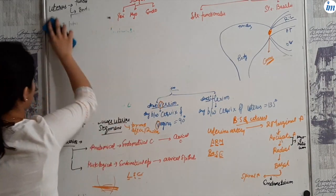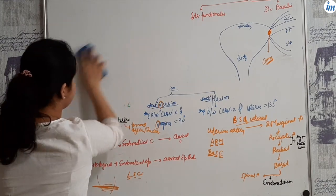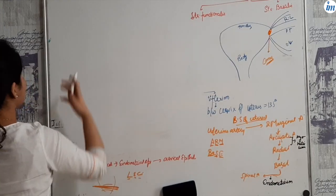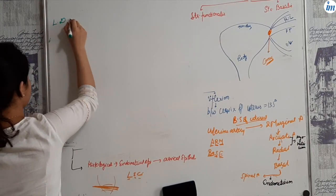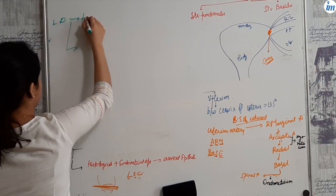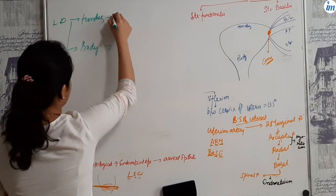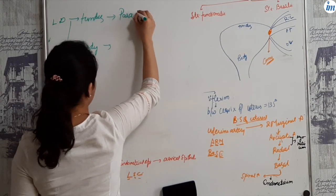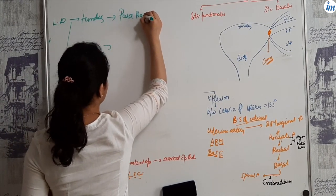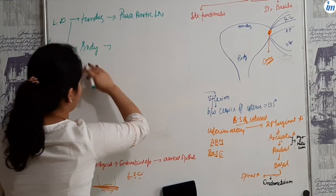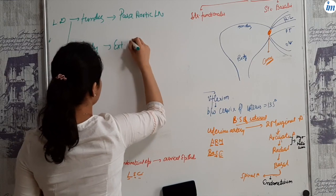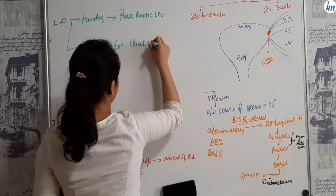About the lymphatic drainage of the uterus. The fundus and body are the two parts. Fundus is mainly drained into the para-aortic nodes. The body drains into the external iliac nodes.